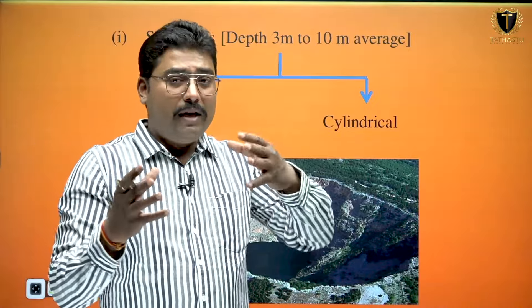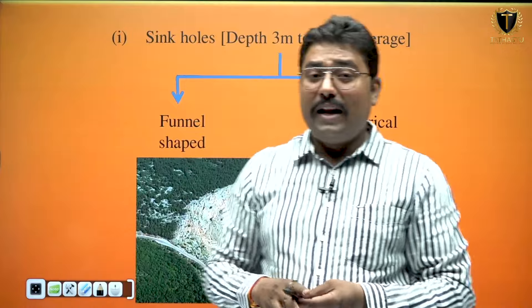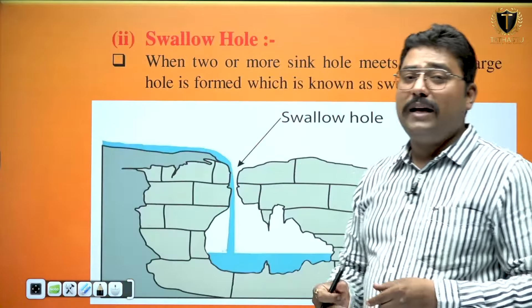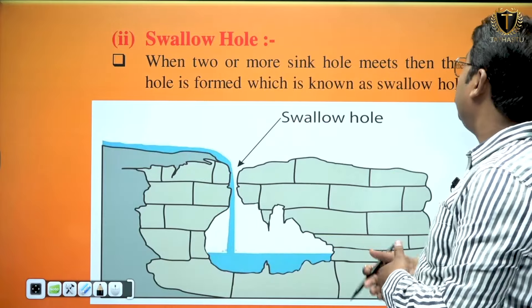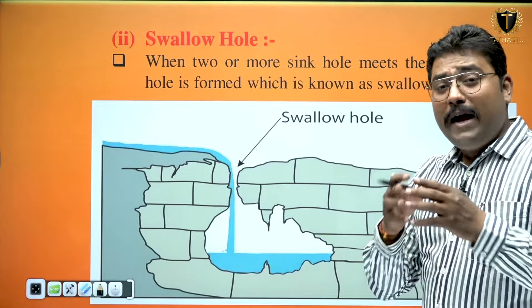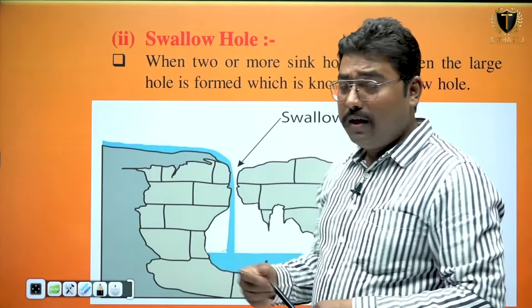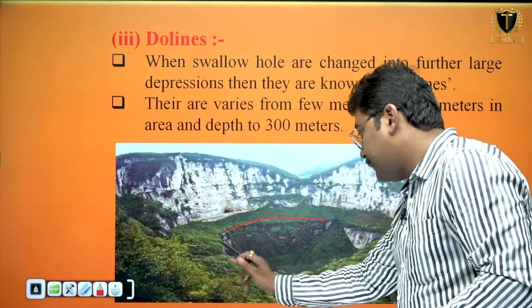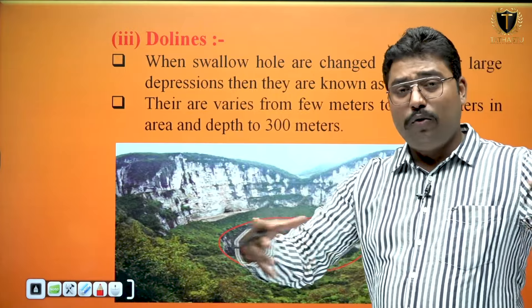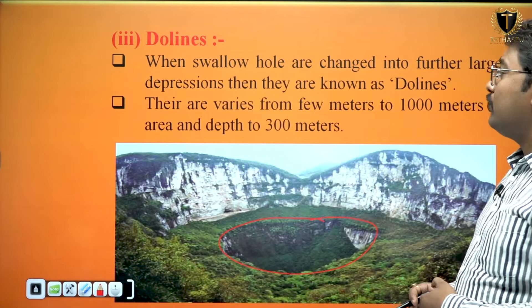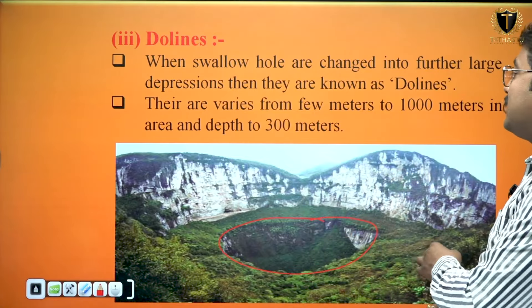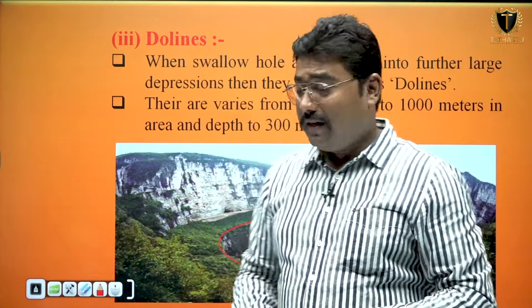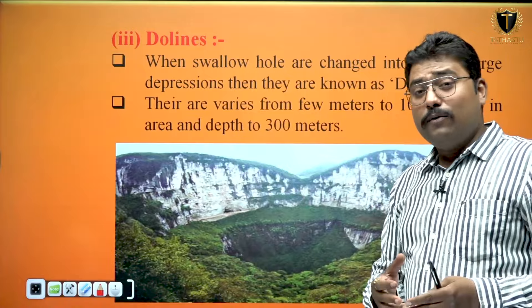As the size increases, the name of the sinkholes changes. When two or more sinkholes join, the opening will increase and that will be considered as a swallow hole. When the swallow hole becomes more bigger it will be considered as dolines. Dolines vary from few meters to 1000 meters in area and more than 300 meters in depth.